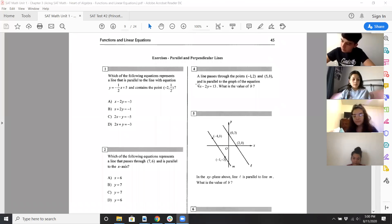So for four, so we have a line pass to those two points and it's parallel to this graph. So negative two y equals negative four x plus thirteen. So y equals two x minus thirteen halves.